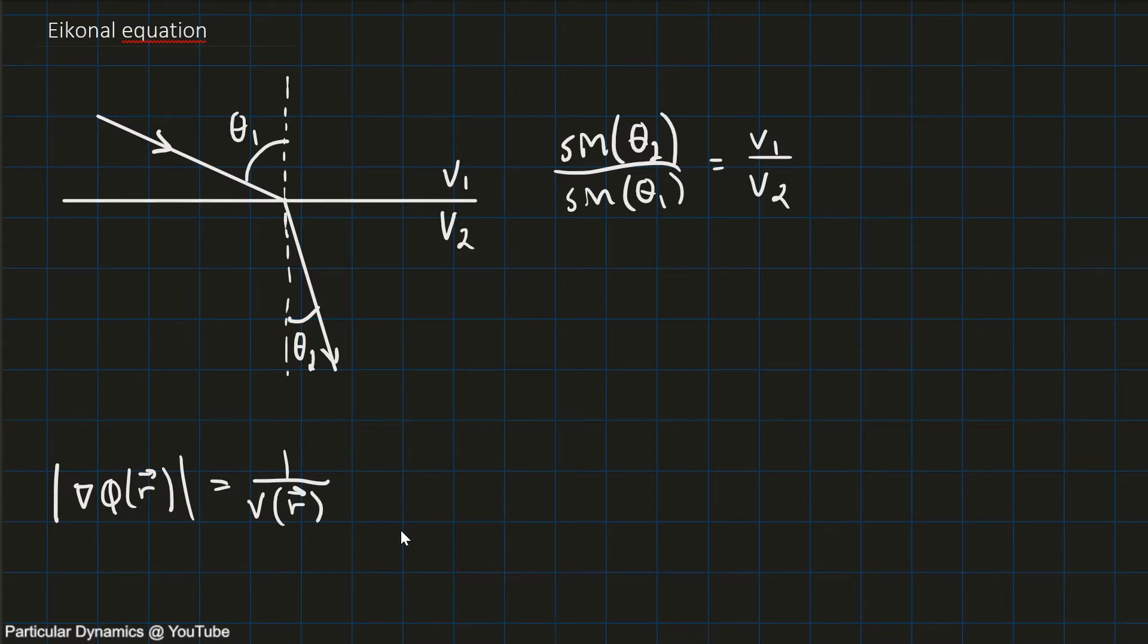And the meaning of each of these terms is that r vector is a position in space. And for a three-dimensional case, r would contain the components of x, y, and z.